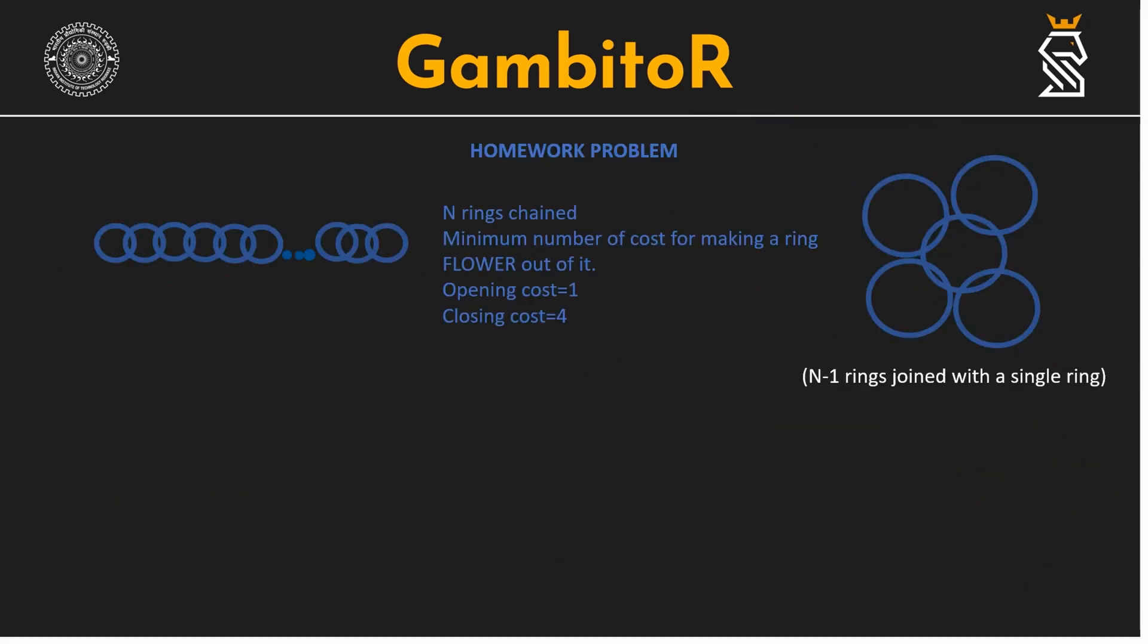Now, moving on to the homework problem. There are n rings chained together continuously and we have to form a flower ring out of it. What is this? This is all n-1 remaining rings entangled in a single ring like this. The n-1 rings are not entangled between each other, they are entangled in a single ring. We have to find minimum cost. Opening cost is 1 and closing cost is 4. Do comment out the answer. It will come in terms of n in the comment box. Thank you for watching the video. See you next time.